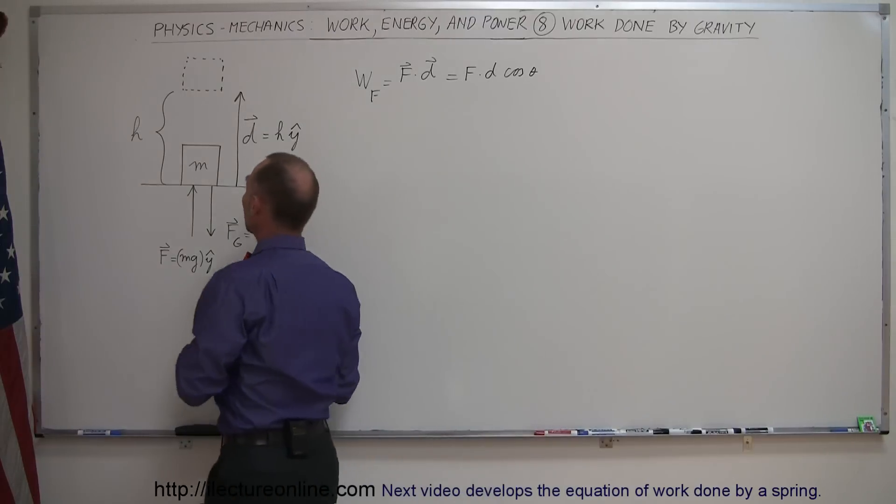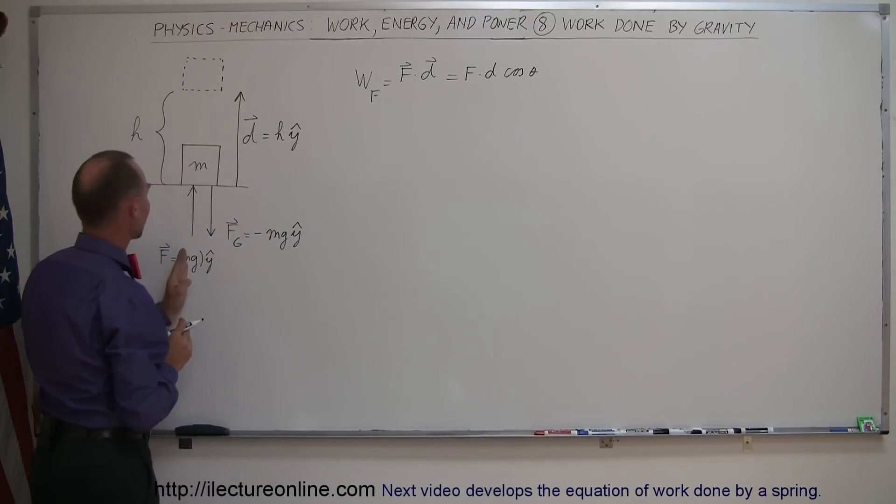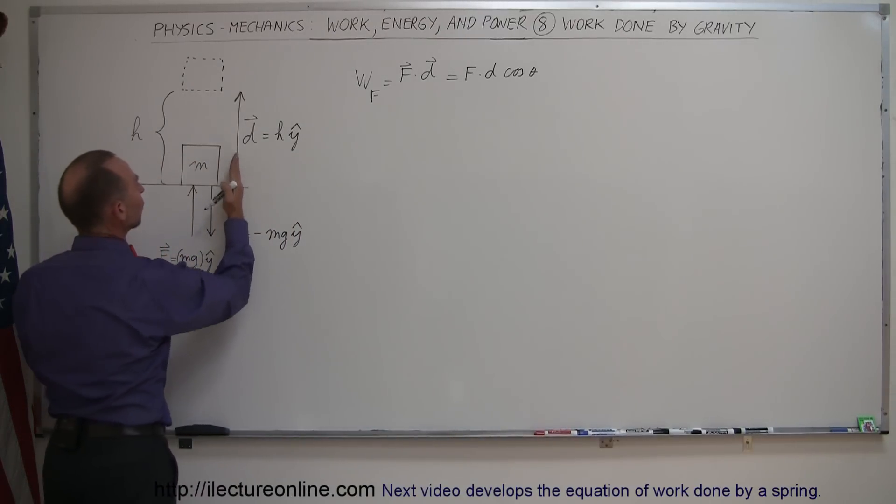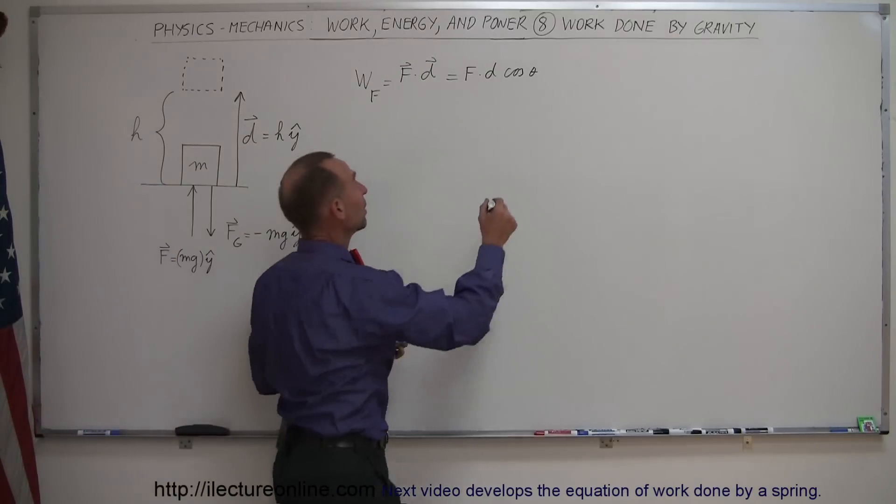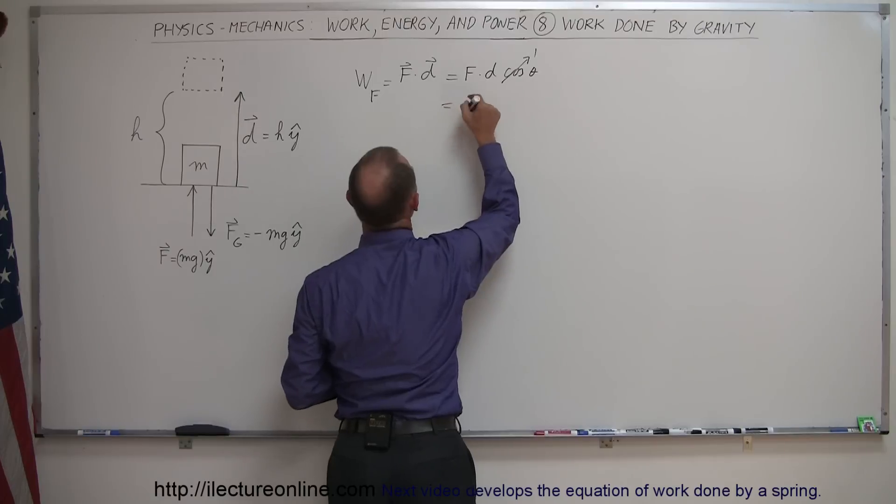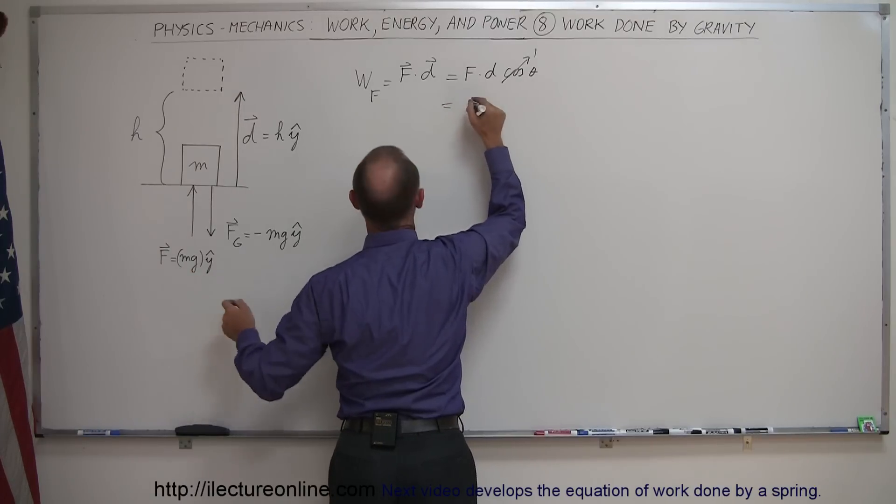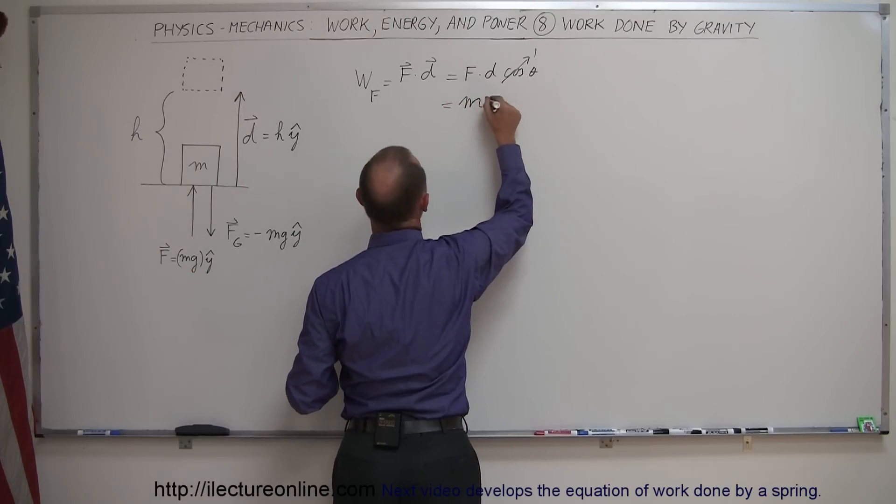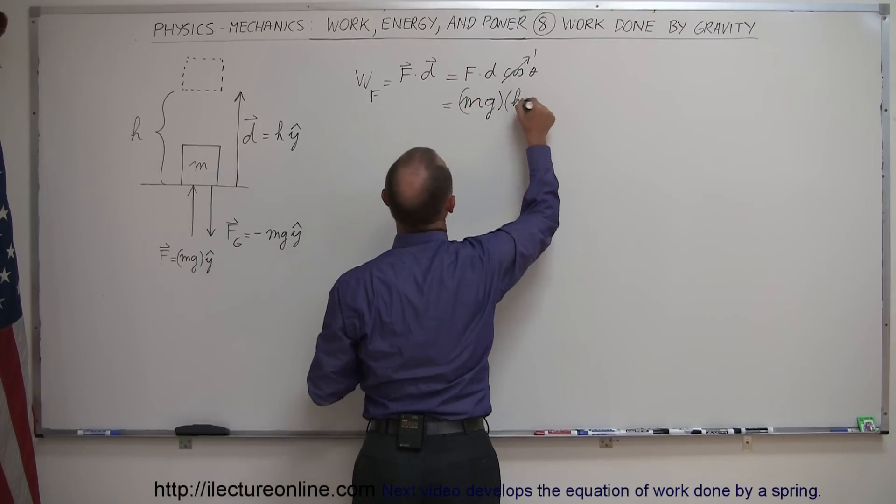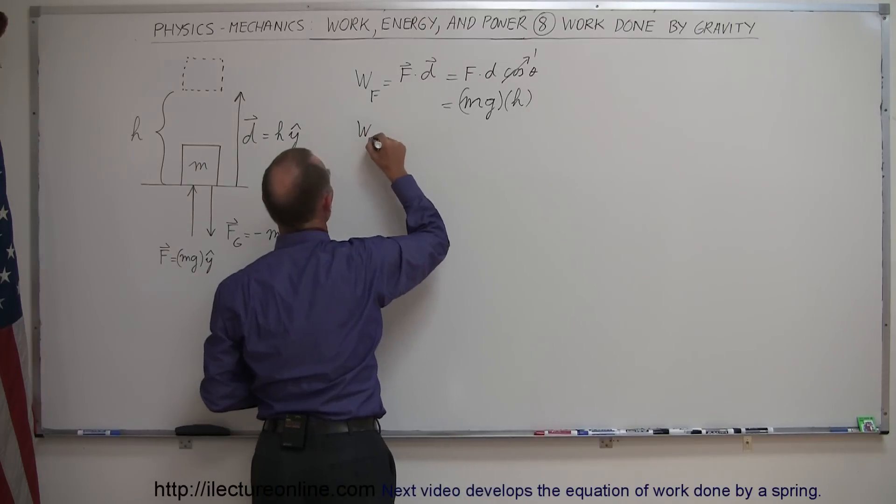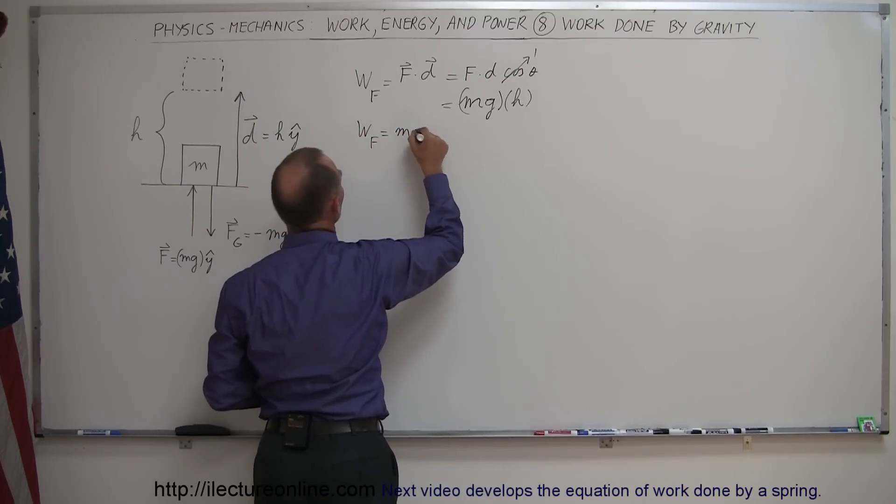And in this case, the angle between them is zero, because we have the force pushing straight up and the displacement being straight up, so the angle between them is zero, so the cosine of zero degrees equals one. And so this is equal to the magnitude of the force, which is mg, times the displacement, which is h, so we can see that the work done by the force is equal to mgh.